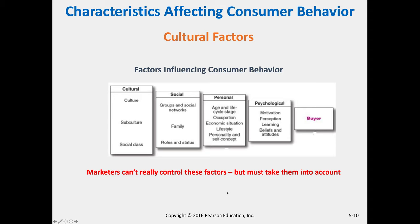Characteristics that affect consumer behavior: cultural factors, and we're going to go through all of these as we move along. This is the model we'll be referencing, starting with culture and ending with the buyer. All of these things affect the buyer - to what degree is the trick, which is why research is done. These are things that marketers can't really control, but you have to take them into account.